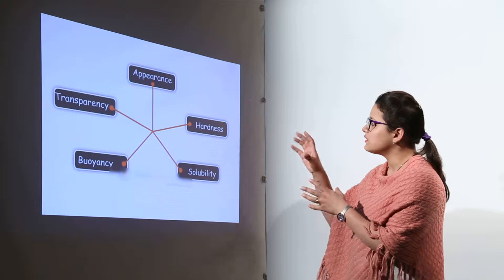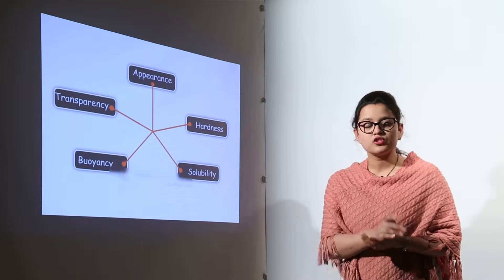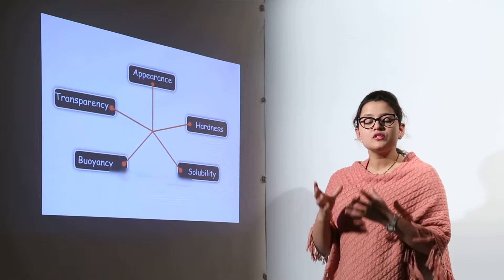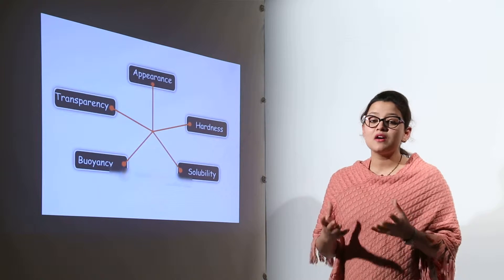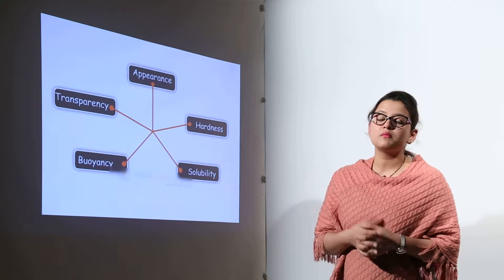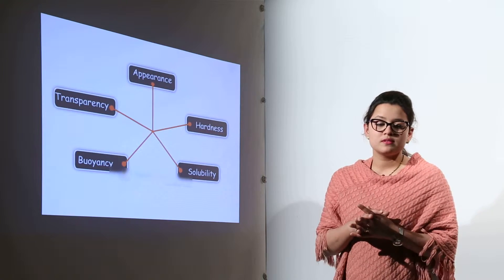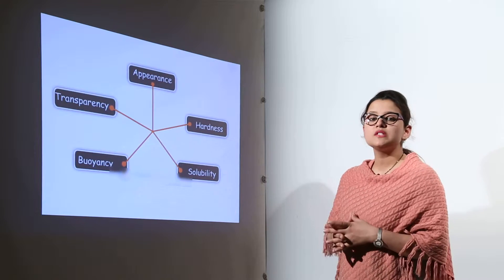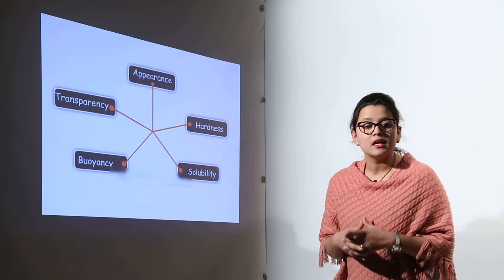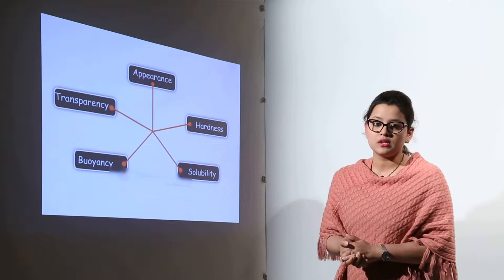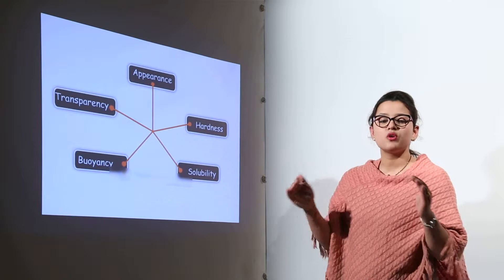First is appearance. A material may appear shiny and lustrous — lustrous means shiny. The appearance of an object decides how it looks. Gold ornaments that our mothers wear have a very shiny appearance. Similarly, new aluminium and iron articles from the market have a shiny surface, but after some time their shine gets reduced due to atmospheric moisture and oxygen.